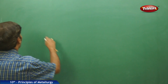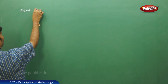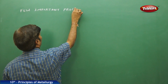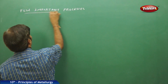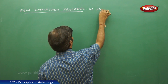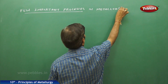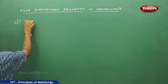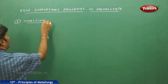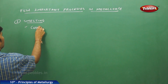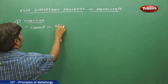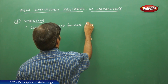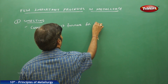The next part of the discussion in metallurgy covers a few important processes. The first one is smelting. Smelting is carried out in a blast furnace for the extraction of iron.